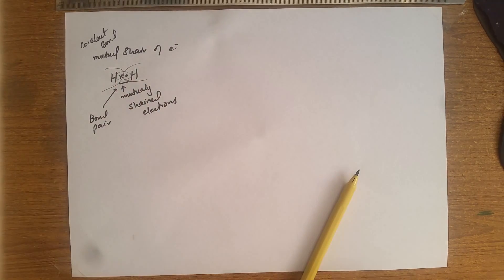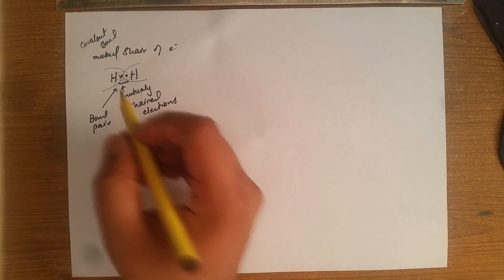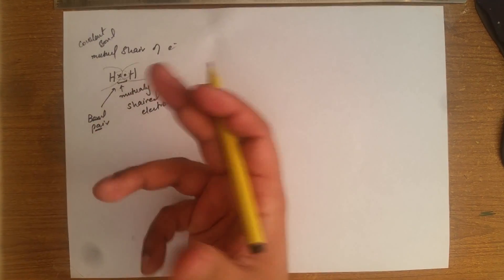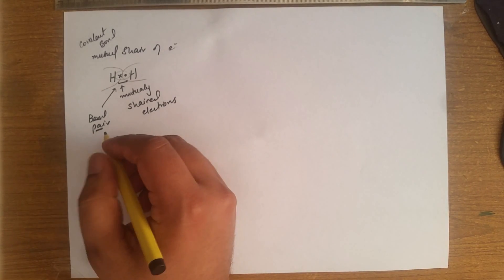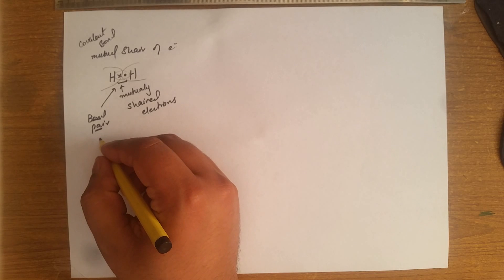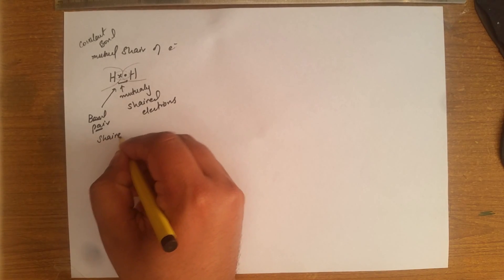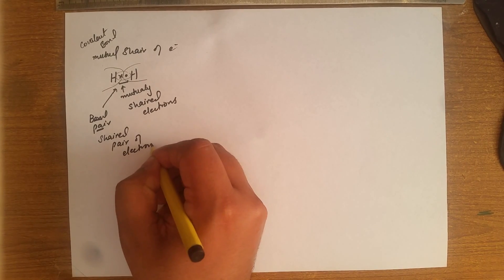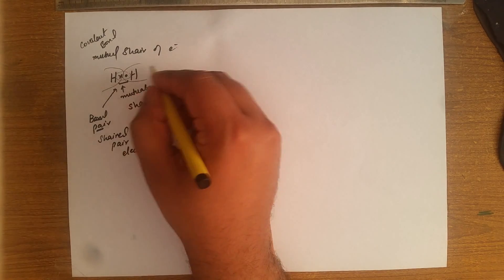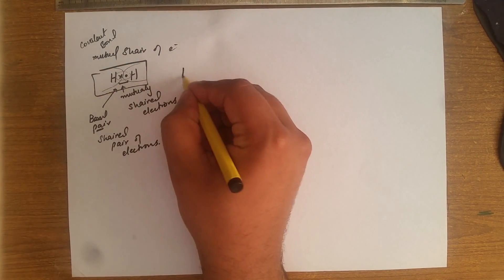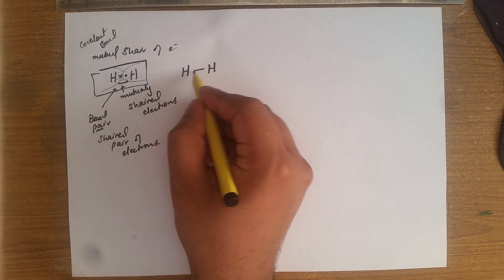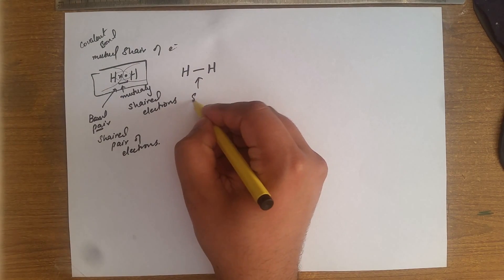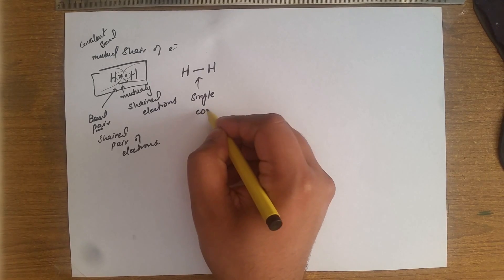There are two electrons involved in the bond pair. If anybody asks you how many electrons are in a bond pair, you must say there are two electrons — called a shared pair of electrons. This structure can be written as a single line, which shows two electrons and makes a single covalent bond.